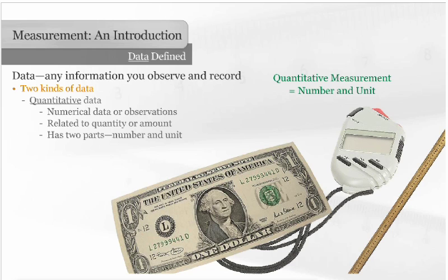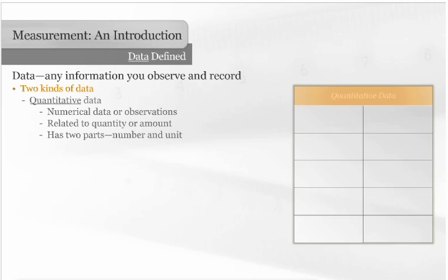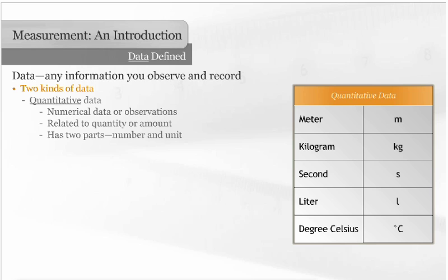Units can be represented by either words or symbols. Symbols are not abbreviations and are not followed by periods. The symbol for meter is a lowercase m. Kilogram is represented by a lowercase kg. Second is shown as a lowercase s. Liter is a lowercase l, and degree Celsius is represented by a degree symbol followed by a capital C.